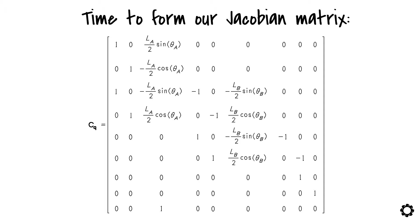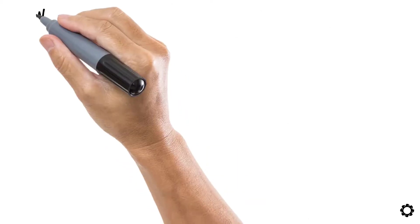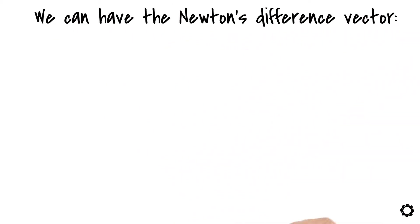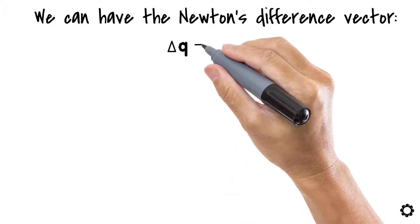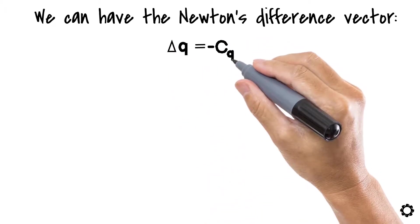Now with the Jacobian matrix of the constraints, we can have the Newton's difference vector. Delta q equals minus cq inverse times c.